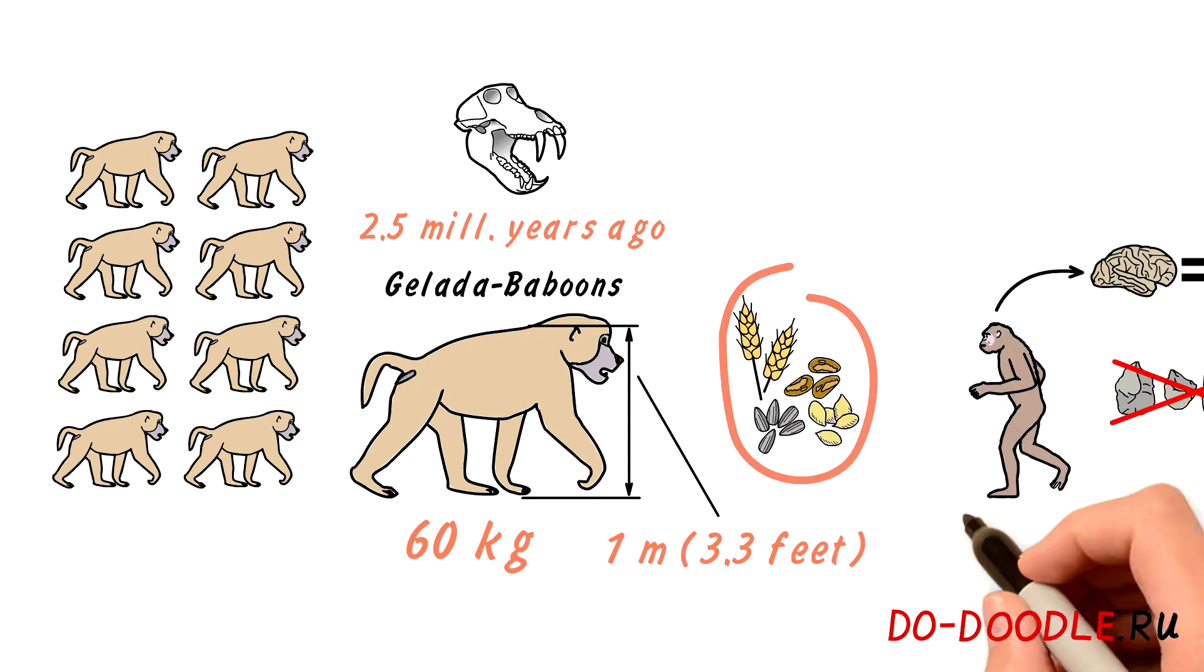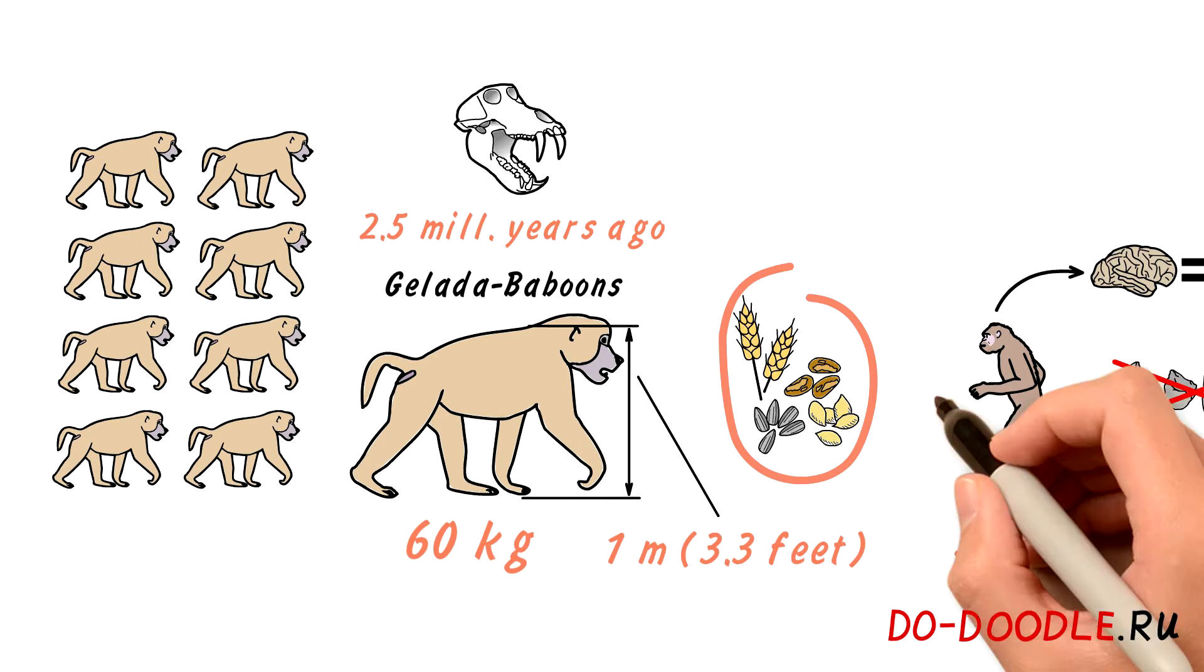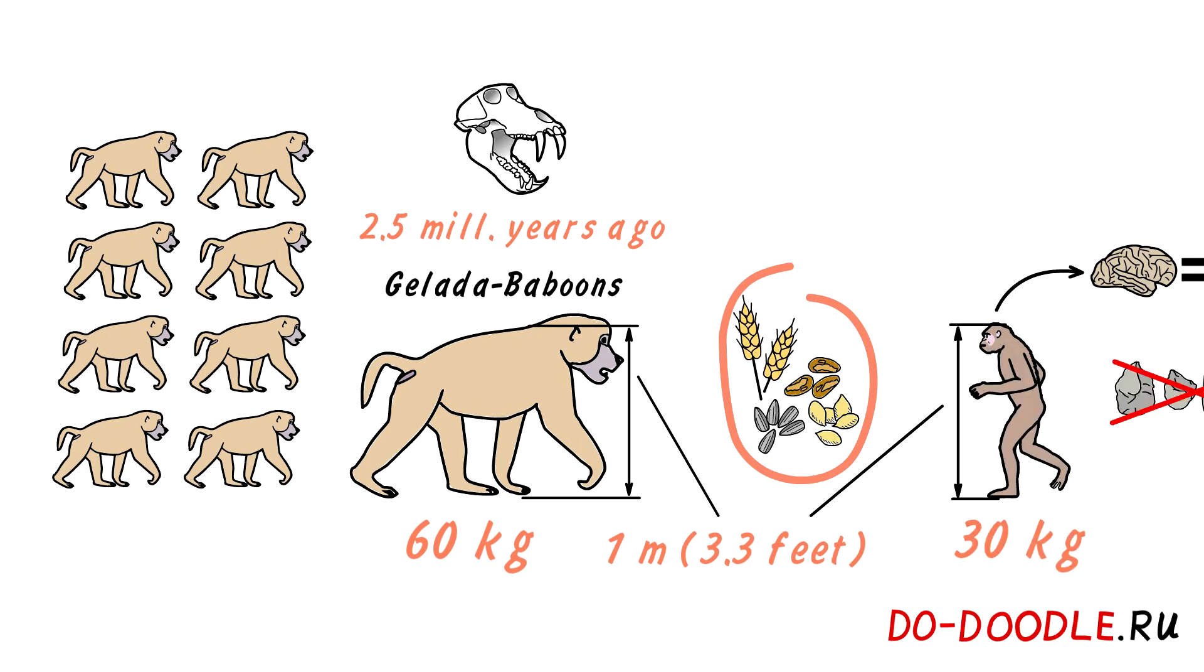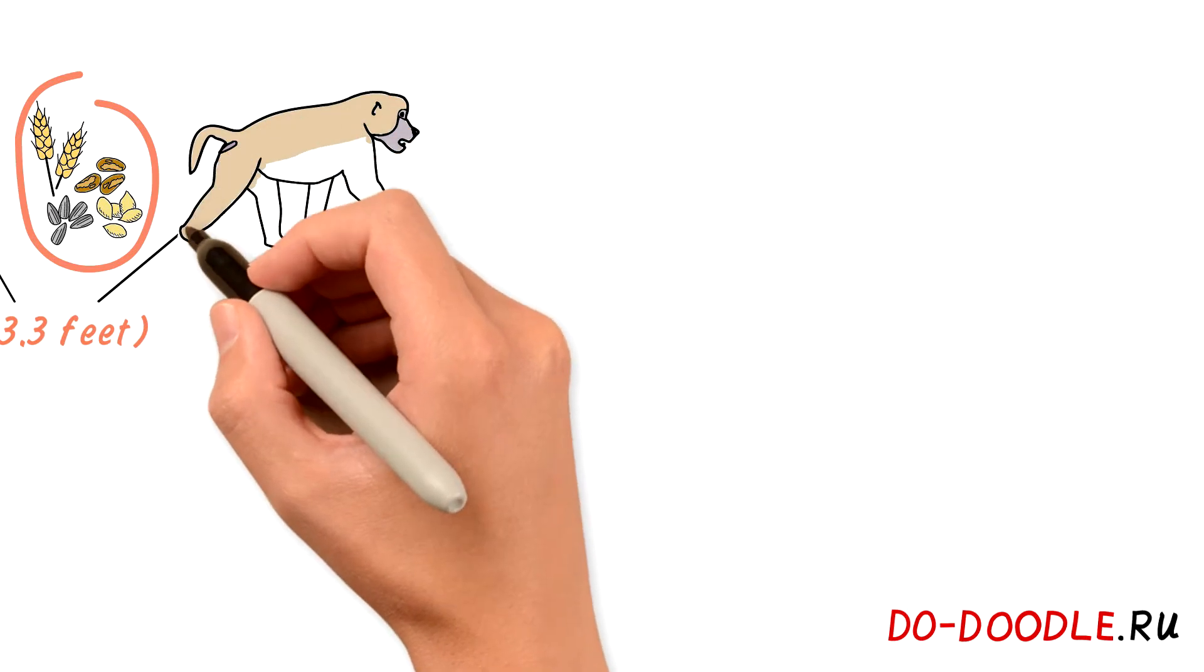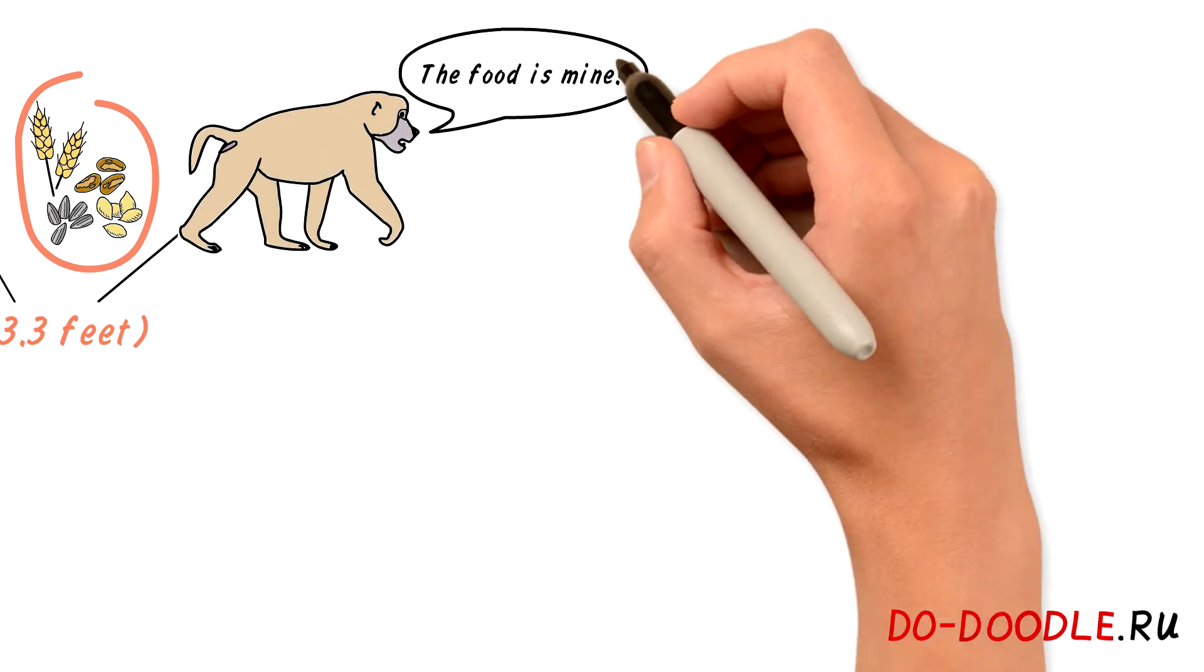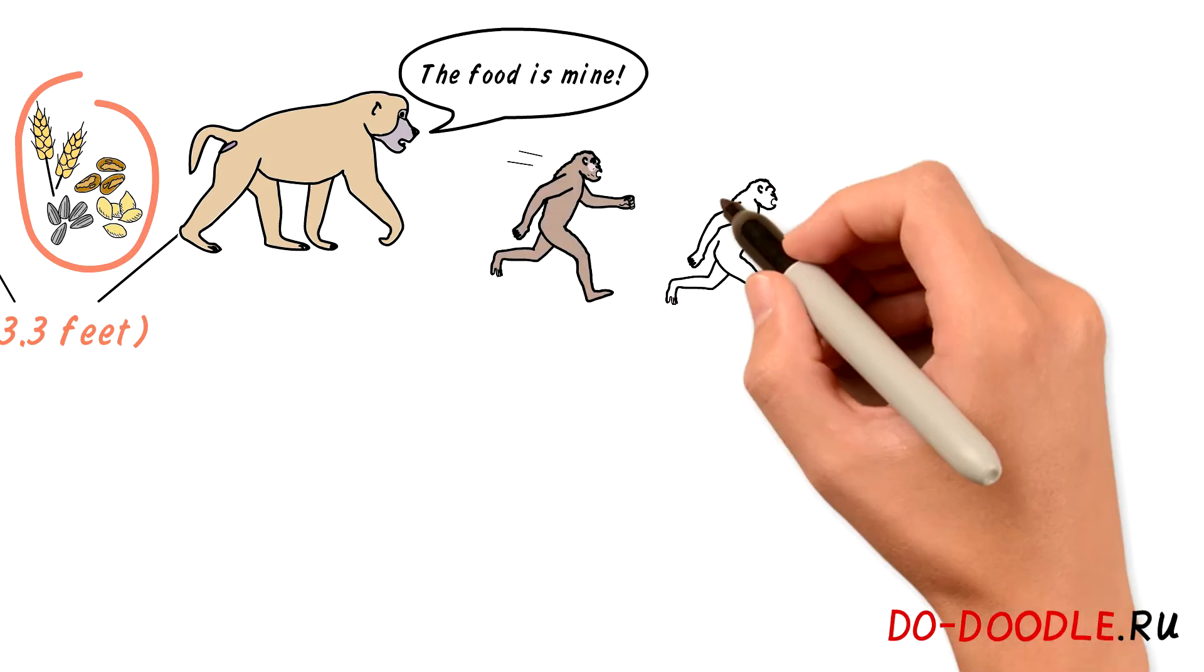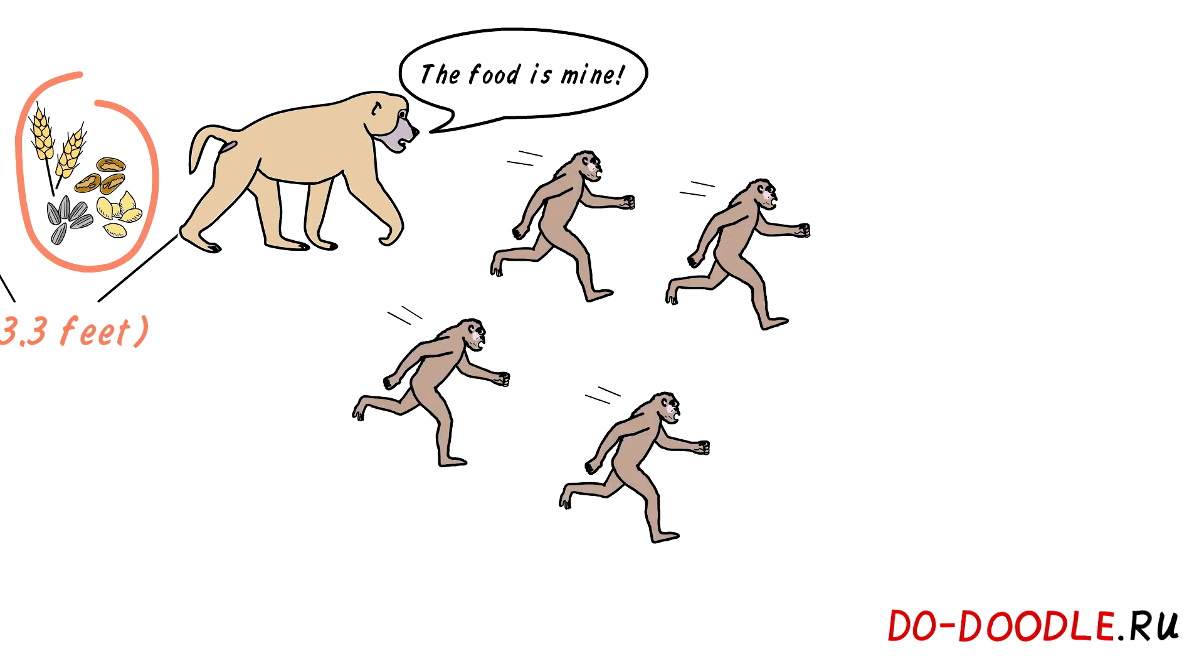Australopiths had only 30 kilos of live weight and were one meter high but while standing up on two legs. Expectedly enough, the environmental race was lost. Giant gelada won, australopiths zero. Most of their species vanished without a trace.